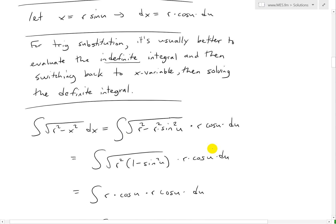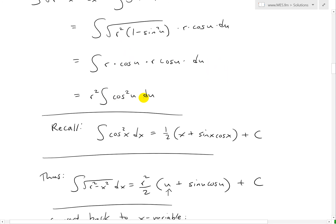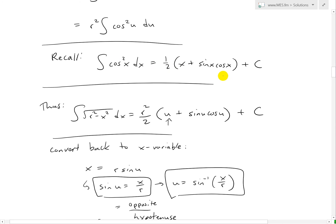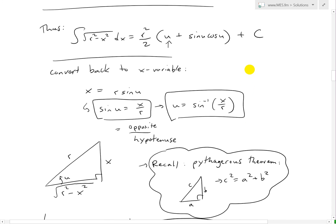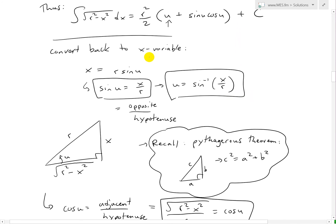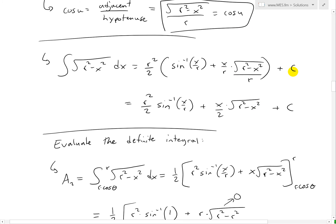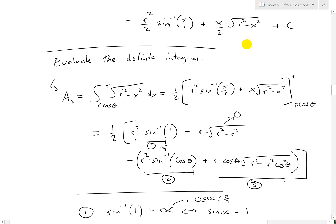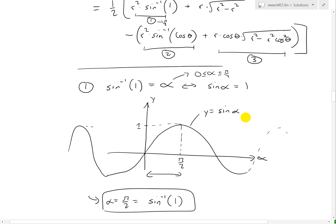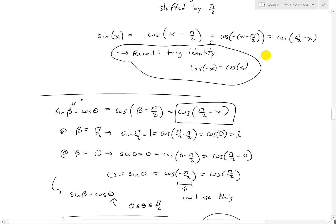I wrote it all like this using a substitution and plugged it in, got r²·cos²(θ), and then r² times the integral of cos²(u) du. I plugged in the integral I solved earlier. After solving all this, I switched variables, converted to the x variable, and plugged it into the indefinite integral — because we're not integrating it between specific limits there. That's the way I did it before. Now I'm going to show you how we can get to the exact same answer by using a definite integral the whole way.